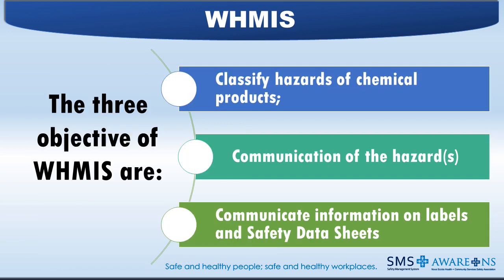WHMIS 2015 has three objectives: classify hazards of chemical products; communicate the hazards, which includes possible health effects and how workers can protect themselves, including proper storage; and communicate health and safety information on labels and safety data sheets.